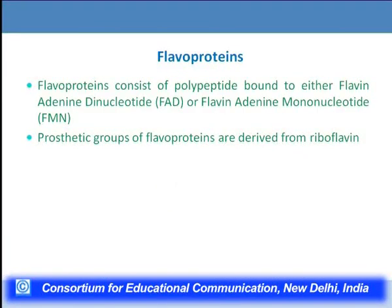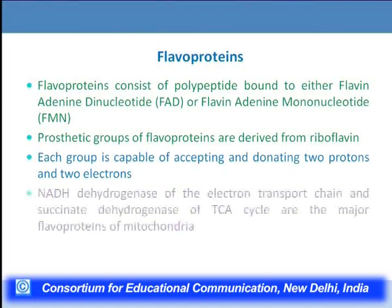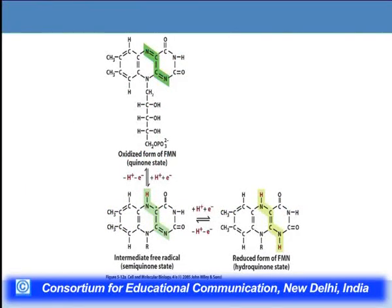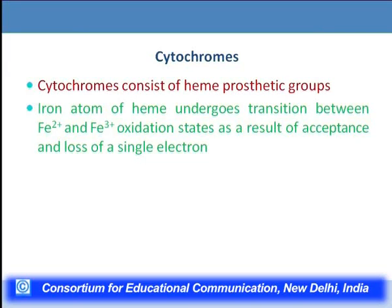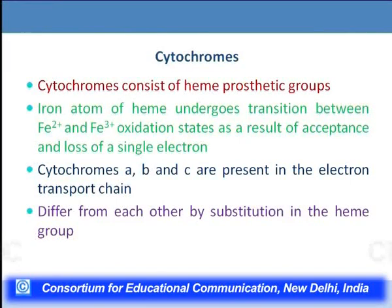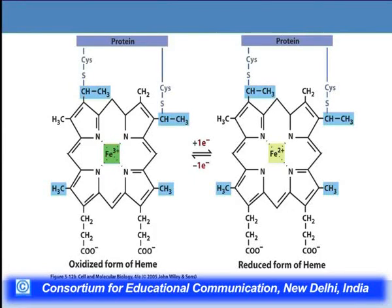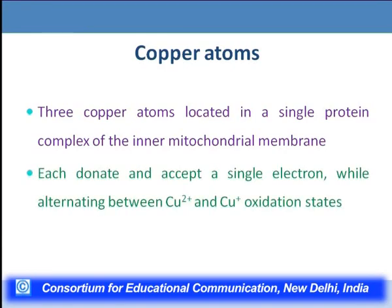Flavoproteins have either FAD or FMN prosthetic groups derived from riboflavin, each capable of accepting 2 protons and 2 electrons. Cytochromes contain heme prosthetic groups with iron in Fe²⁺ or Fe³⁺ oxidation states and are capable of accepting and losing a single electron. There are three cytochromes — A, B, and C — in the electron transport chain. Copper atoms, 3 per protein complex, alternate between Cu²⁺ and Cu⁺ states, each capable of accepting and donating a single electron.